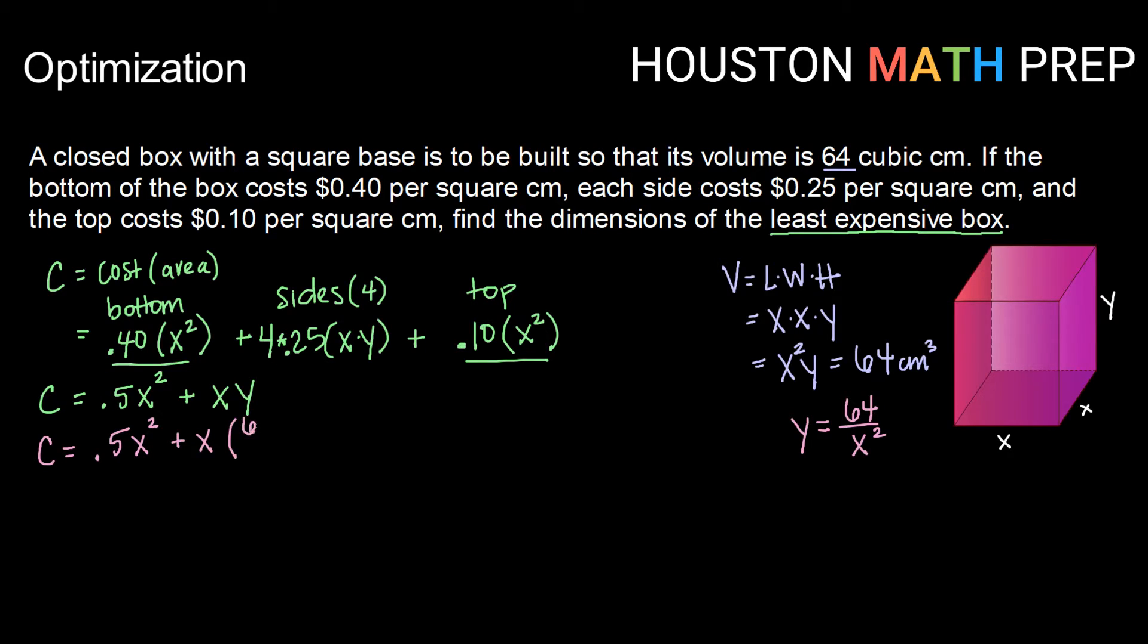So we're placing that into my cost function. I have 0.5x squared plus x times 64 over x squared. Simplifying there, I have 0.5x squared plus 64 over x. Alright, before we get into finding our critical point, let's think about a reasonable interval to work with here. So we're thinking of our interval in terms of x since we now have our cost function in terms of x.